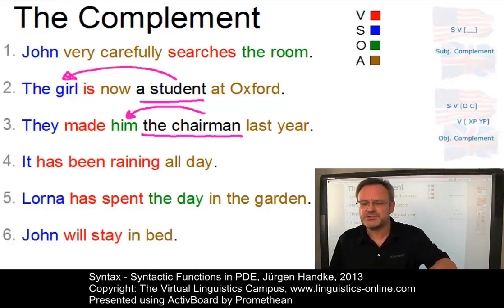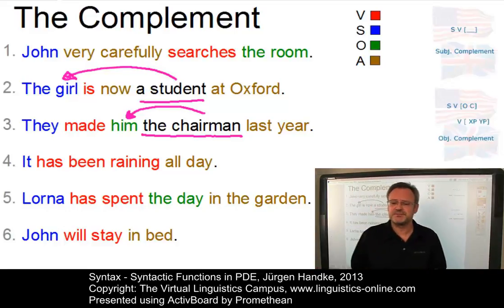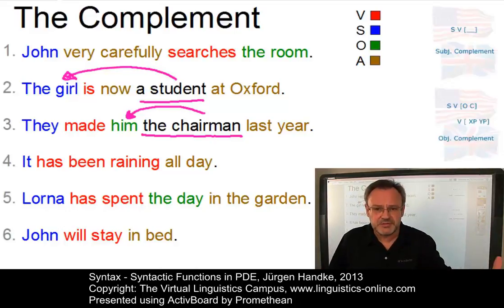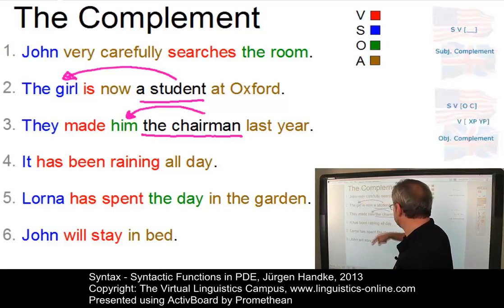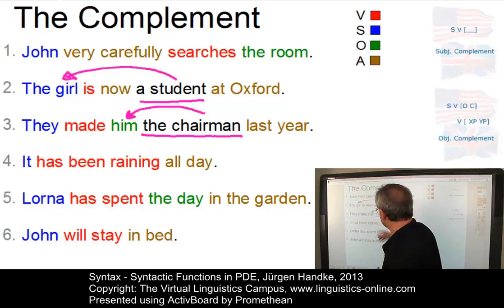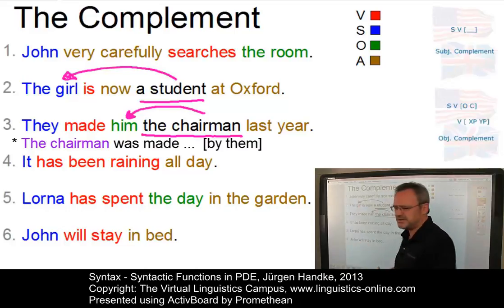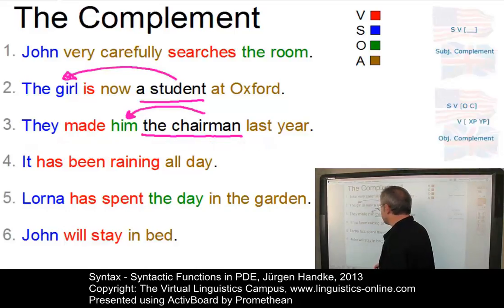To identify complements, two ways are generally suggested. For subject complements, they normally share the grammatical properties — for example, number — with the subject. For object complements, here is a useful test: they cannot become the subjects of corresponding passives. So he was made the chairman by them is possible, but the chairman was made by them for him or something like it is impossible. As a result, him is an object and the chairman is clearly an object complement.